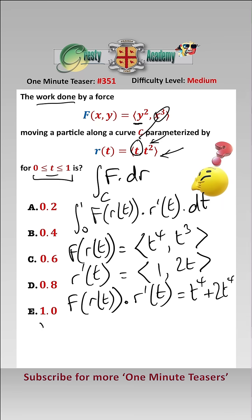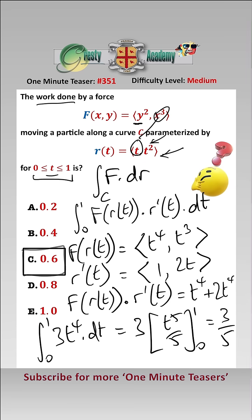Now we're almost there. Now all we need to do is the integral between 0 and 1 of 3t⁴ dt, which equals 3t⁵ over 5 between 0 and 1, which equals 3/5, which is 0.6. That's answer C.